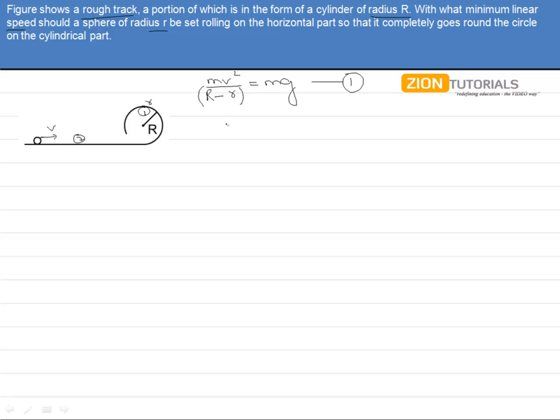So we can also employ the conservation of energy over here between the initial and the topmost position, for which we can write it out as the initial velocity being ½mv'² (if we take this to be the v' velocity) equals to...